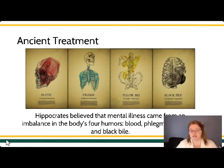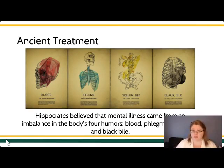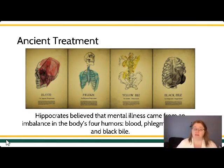For instance, if you have a sanguine temperament — a personality that's very gregarious, very outgoing, very fun-loving — and if it's too much, if you're experiencing symptoms that we might call mania, where you're not thinking clearly, not rationalizing, a little bit out of control, then a person may recommend that you bring yourself back into homeostasis by getting rid of some of that excess blood. These would be things like bloodletting or using leeches.